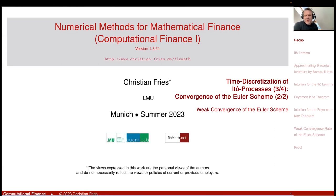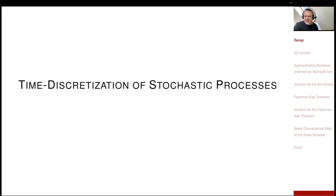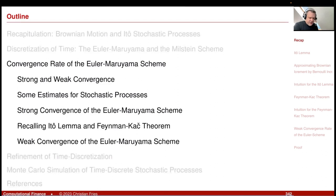Welcome to Numerical Methods. Today I'd like to continue in our section on time discretization of stochastic processes, specifically in the section on convergence rate and proof of the convergence of the Euler scheme.